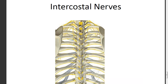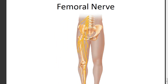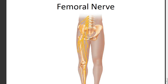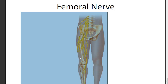The femoral nerve comes off the lumbar plexus in the lower back. It is the one nerve from that plexus you need to know, and it comes over the front of the leg. When you think of the femoral nerve, think femur — they share the same root.